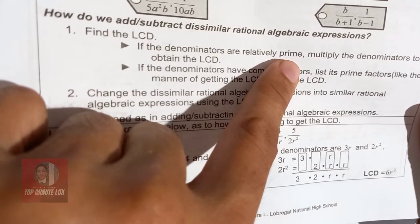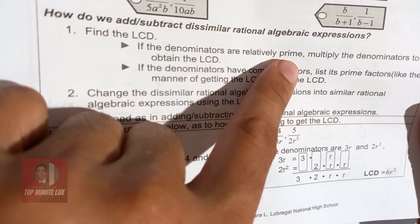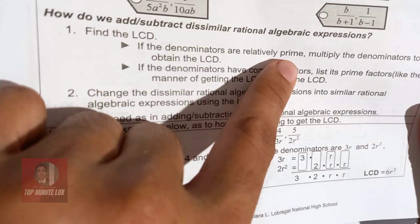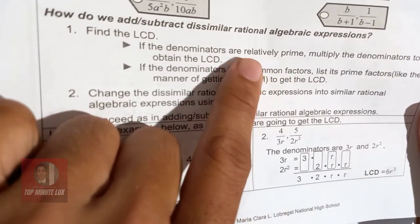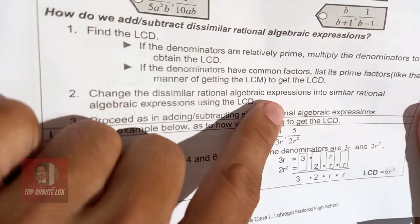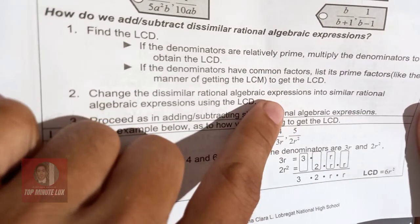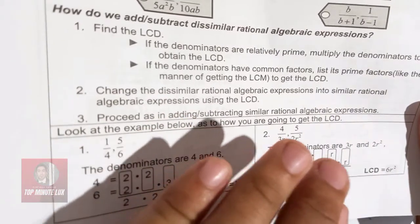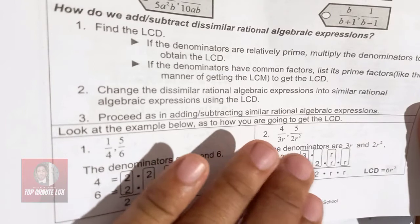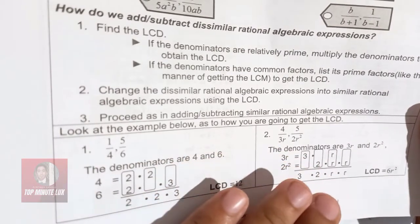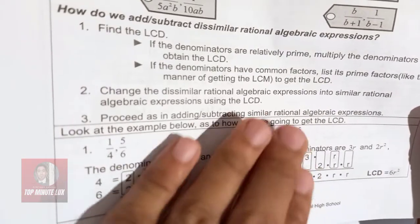These are numbers that you cannot anymore factor and their factors are themselves and with 1. For example, with 2, 2 times 1, with 3, 3 times 1, and no other numbers that you can multiply just only themselves and 1. 2 times 1, 3 times 1, 5 times 1, 7 times 1, 11 times 1, 13 times 1, those are examples of prime numbers.